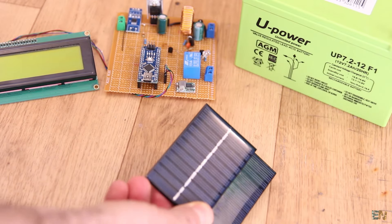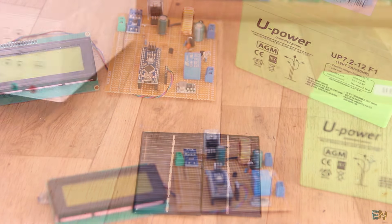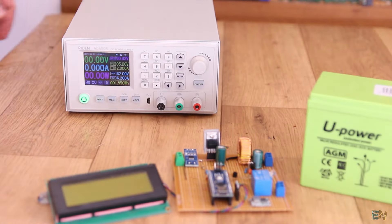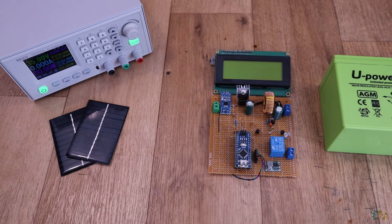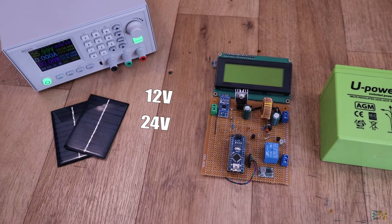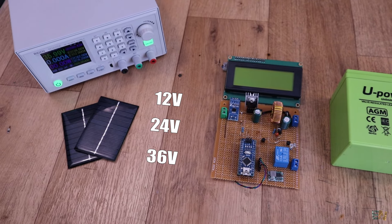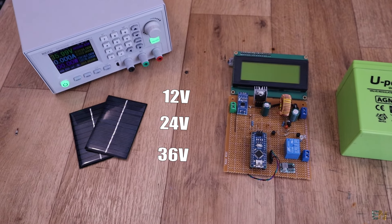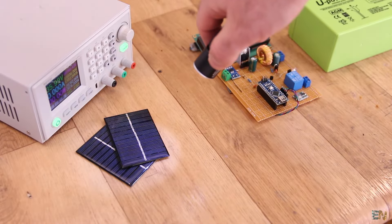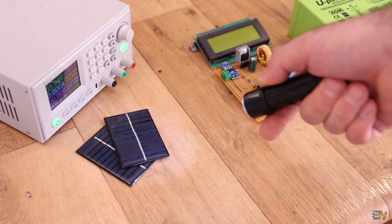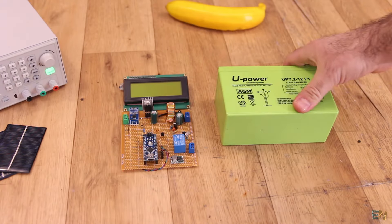I don't have a huge solar panel because I live in an apartment. So to simulate a solar panel, I will use my power supply. Usually you can buy these panels of 12V, 24V or 36V. But remember that this voltage will be affected by the sunlight, the temperature and so on. Now that we know what we have to do, let's build the controller.